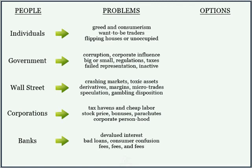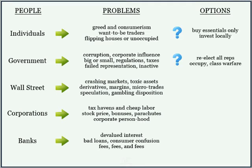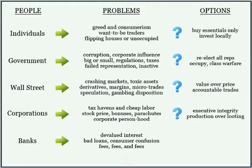There are several options for each of these problems. Individuals could only buy what they need and invest locally. Nations and the people could recycle every elected representative, or occupy public space indefinitely and engage in class warfare. Wall Street could pay attention to the actual value of their trades, or resolve that every transaction must be executed by a real individual person.